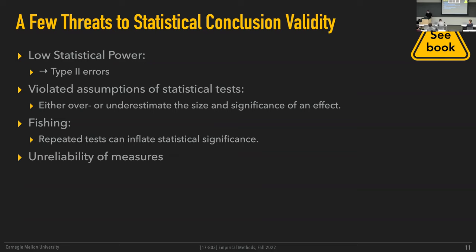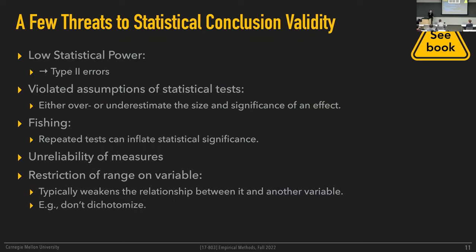Measures could be unreliable — they might not allow you to observe the things you're actually trying to establish. Restriction of range in variables is another good source of type two errors. A good example: when you have a numerical variable like human height and you discretize it into groups — say short versus tall — the more you discretize your data, the less resolution you have to observe effects. When in doubt, you're always better off with more fine-grained data, as discretizing typically weakens the relationship between variables.